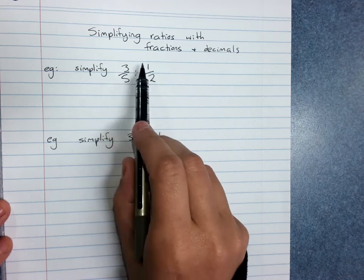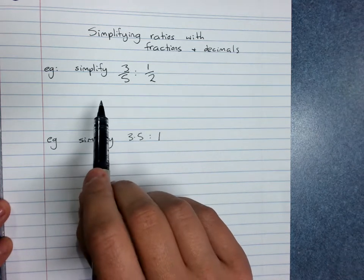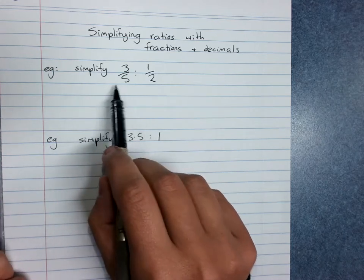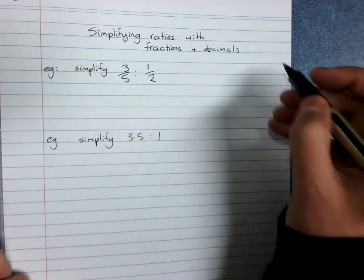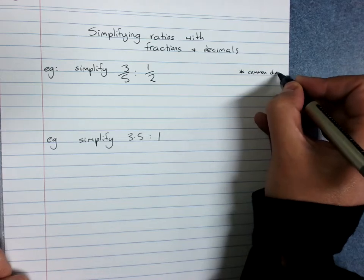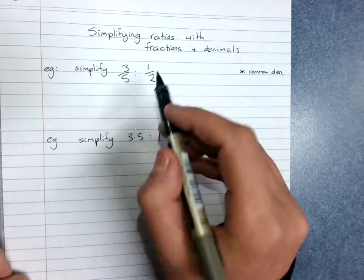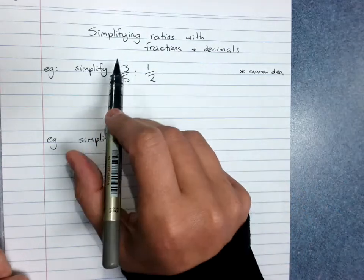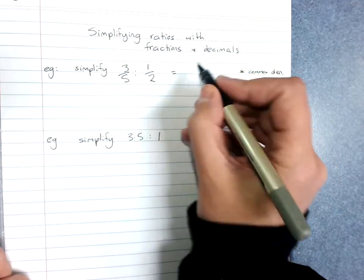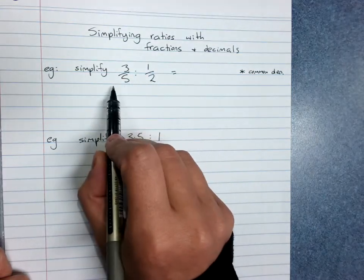Take the example 3 fifths to 1 half. The simplest way to simplify a ratio with fractions is to get them to a common denominator, and then cancel out the denominators. So getting 1 half and 3 fifths to a common denominator — our lowest common multiple here will be 10.